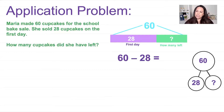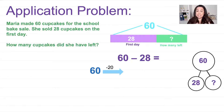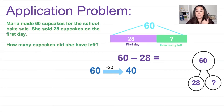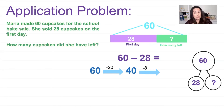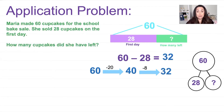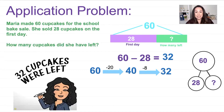I'm going to use an arrow way. I'll start at 60 and start subtracting. Looking at 28, it has two tens, so I'm going to take away 20. I can do that in my head — that's 40. Then I look at my ones: I have eight ones. 40 take away 8 — I know that 10 take away 8 is 2, so 40 take away 8 is 32. So 60 take away 28 equals 32. There are 32 cupcakes leftover.